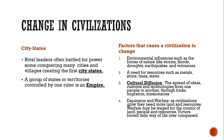As rival leaders often battled for power, some conquering many cities and villages, creating the first city-states. These city-states came together to form larger governmental-type organizations. A group of states or territories controlled by one ruler is an empire.